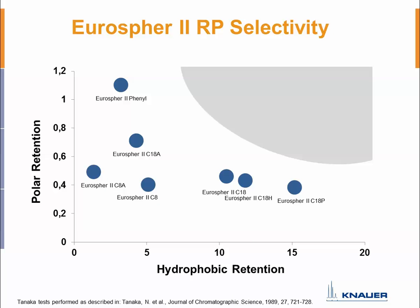When comparing reversed phase selectivity, the two most important interactions are polar retention and hydrophobic retention, with steric interaction also playing a role. Quantitative comparisons can be made using Tanaka tests, which produce a chart showing where each column lies in selectivity space. Our Eurosphere 2 column family covers a really broad range of selectivity, so in nearly any case, one of these columns can be used to solve your application problem.